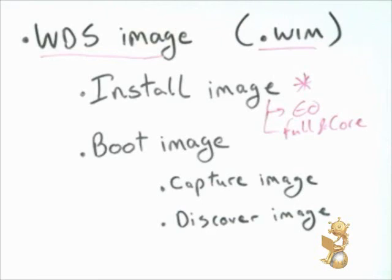An install image has the extension .wim and can be located on the installation media in a folder called Sources at the root of the DVD. Each install image is architecture-specific, so make sure when you want a 64-bit or 32-bit installation that you download or purchase the proper architecture image. Each install image can contain the different editions of the Windows operating system.